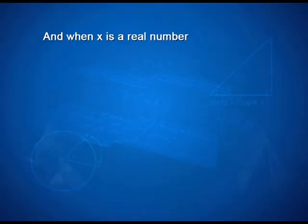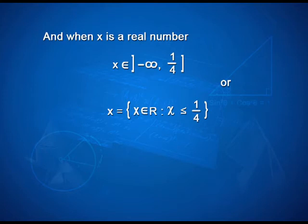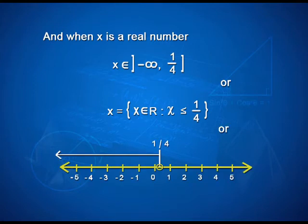When x is a real number, in interval form it is written as minus infinity to 1 by 4, open bracket at minus infinity and closed bracket at 1 by 4. In set form, x belongs to R such that x is less than or equal to 1 by 4. On the number line, it starts from 1 by 4 with a colored circle at 1 by 4 because the inequality was less than or equal to, not a strict inequality.